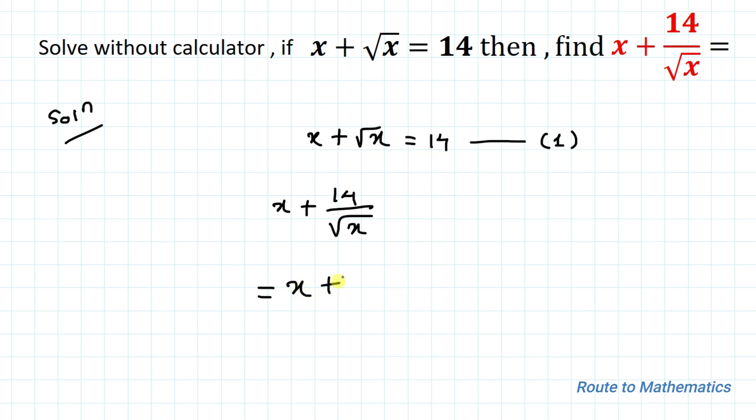From equation 1 we have 14 equals x plus root x. Let's just substitute x plus root x in place of 14. So we have x plus root x divided by root x.